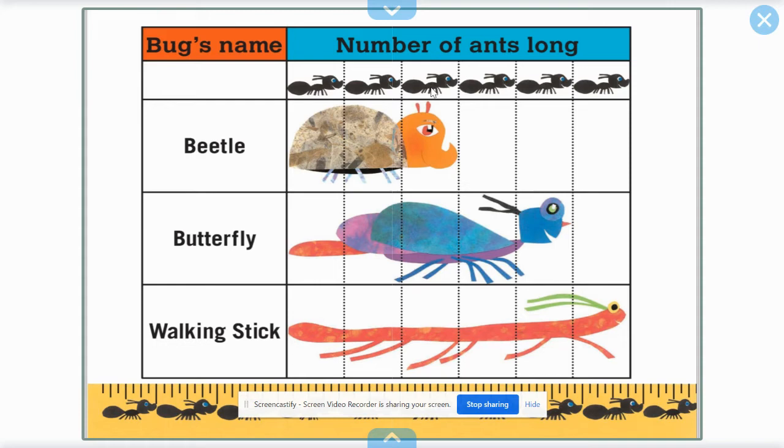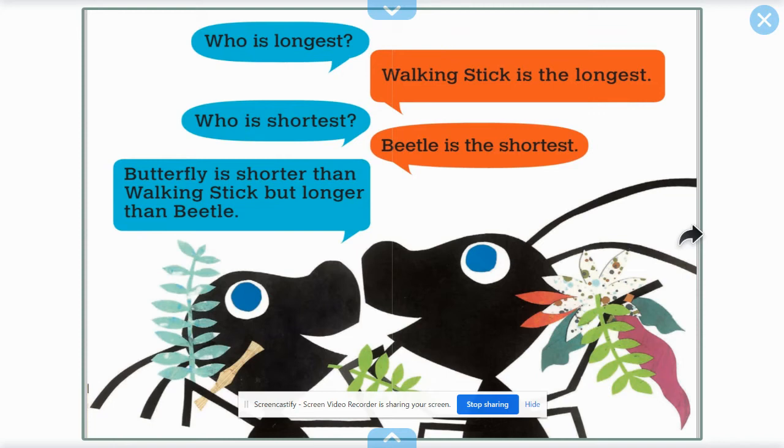How many ants long is butterfly? One, two, three, four, five. And how many ants long is walking stick? One, two, three, four, five, six.